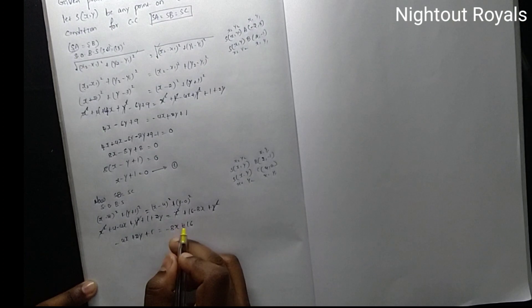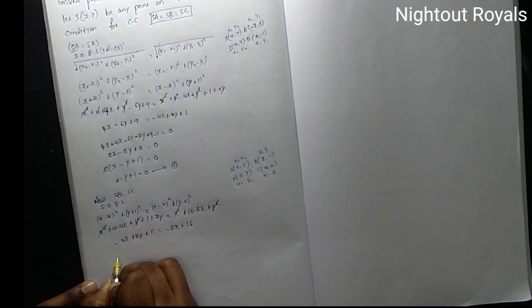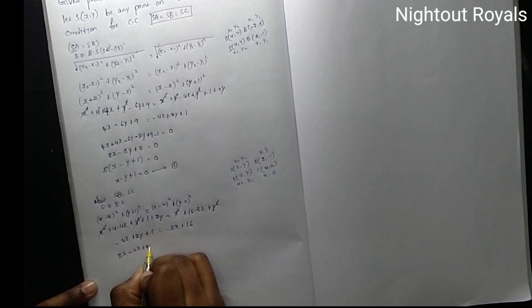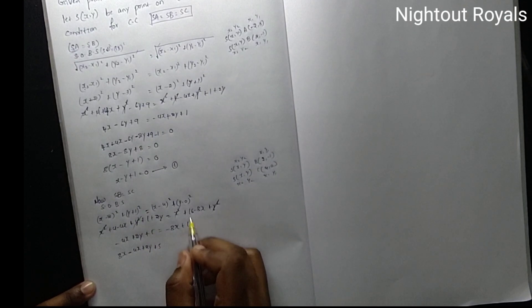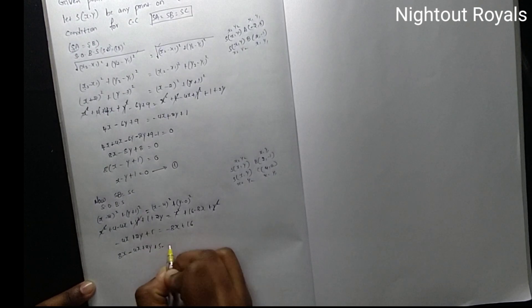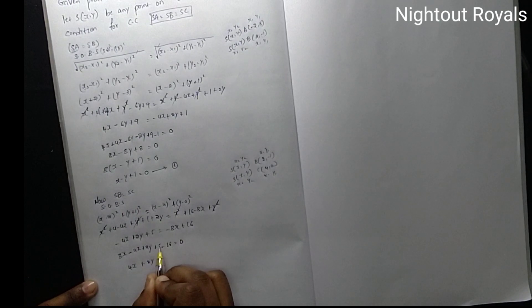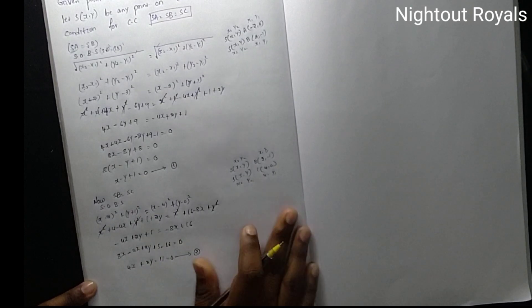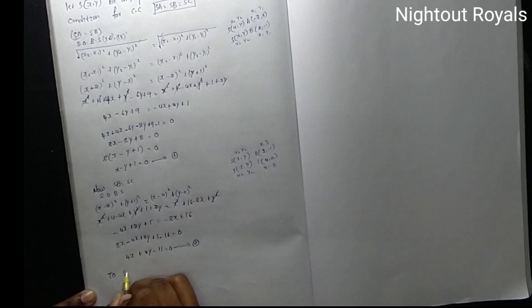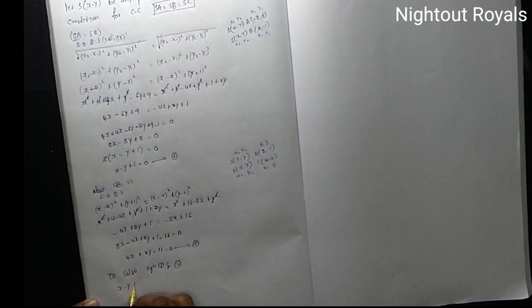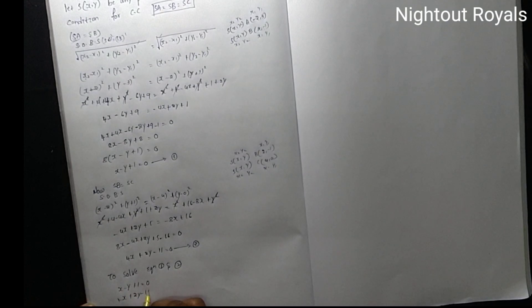Bringing -8X from the right side to the left gives +8X. So 8X - 4X + 2Y + 5 - 16 = 0, giving 4X + 2Y - 11 = 0. This is Equation 2.